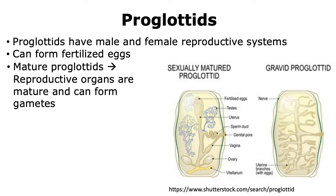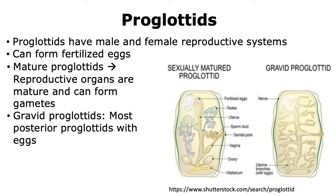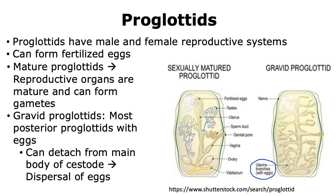The mature proglottids are those where the reproductive organs are mature and can form gametes. The mature proglottids then become gravid proglottids, which are the posterior proglottids, and they will have eggs. One way to identify a gravid proglottid is to look for the presence of uterine branches to which the eggs attach. The gravid proglottids can detach from the main body of the cestode, and this helps in the dispersal of eggs.